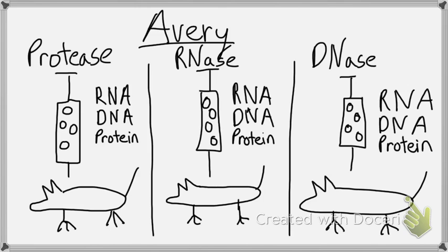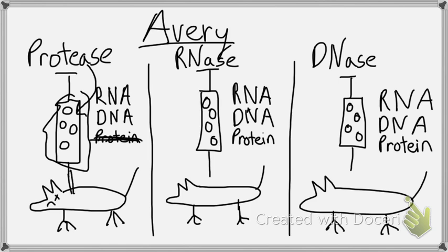When Avery added the protease, it killed the protein. He injected the mouse, and the mouse still died. So he said protein must not be the genetic material, because the genetic material is what is killing the mouse. He removed protein by adding protease to this vial, killed all the protein in there, and the mouse still died.